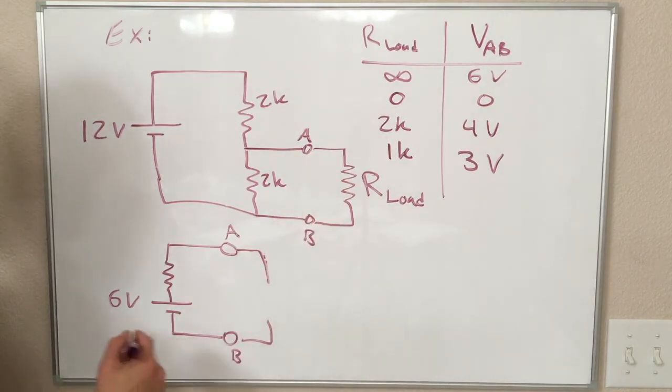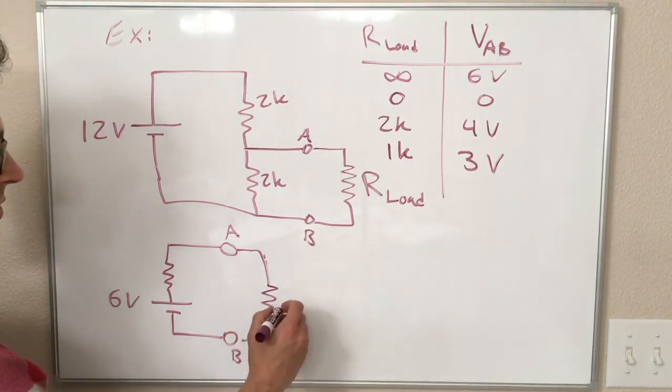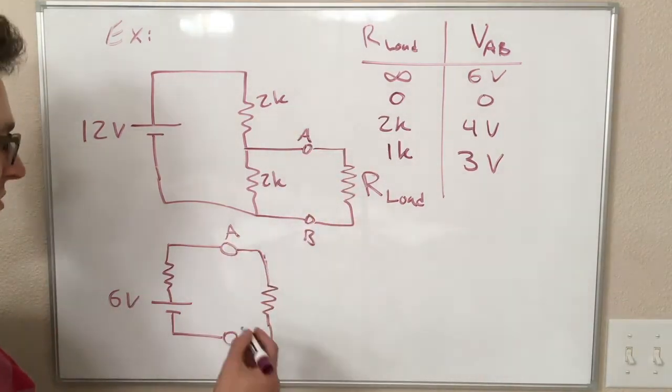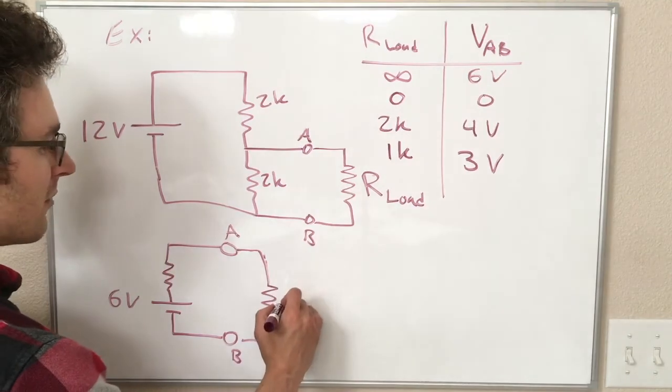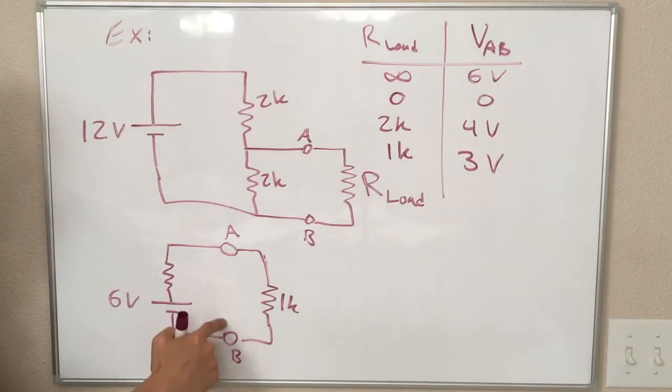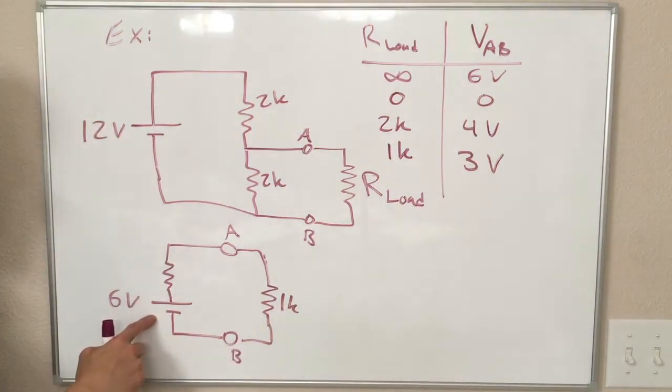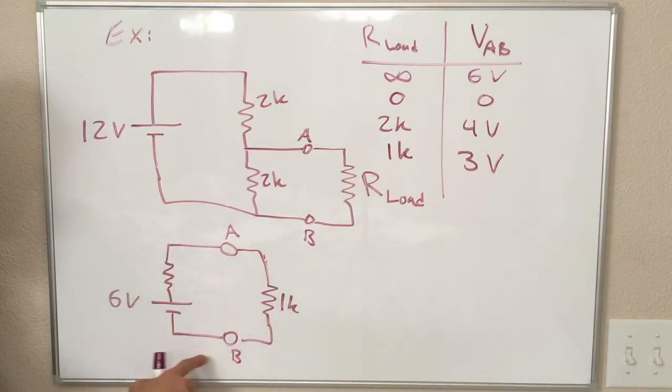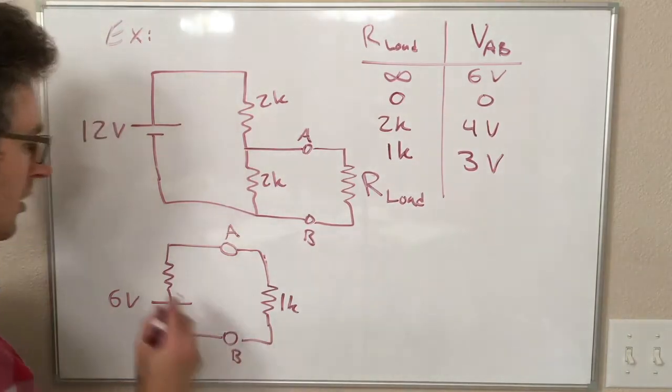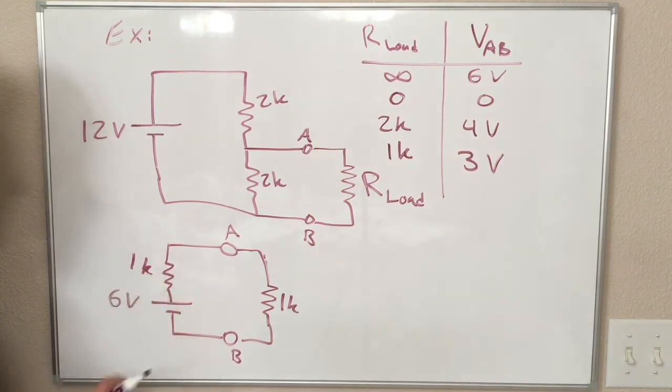And the other thing we can do is, if we put a resistor here, you can convince yourself that this is true. If we put a 1k resistor here, then we know that this voltage between A and B should be 3 volts. Well, 3 volts is half of 6 volts, which means between these two resistors in series, we should have a voltage divider that splits by a factor of 2, which means this resistor should have the same value as that resistor, so this should also be a 1k resistor.